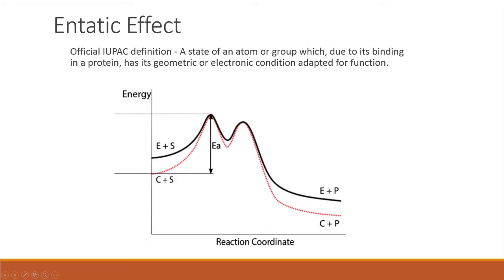We can see that both the starting material and the end product are raised in energy compared to their non-entatic counterpart by an energy difference known as the strain energy. This introduces a new entatic activation energy barrier, which is smaller than its non-entatic counterpart. This results in an increased rate of reaction, as less energy input is required to drive the reaction forward.